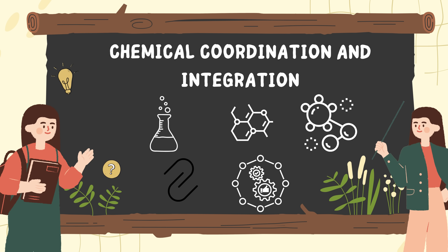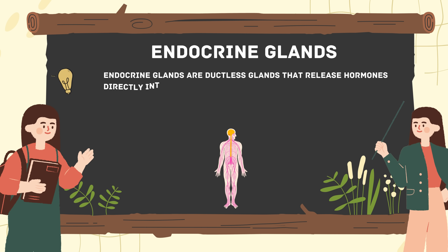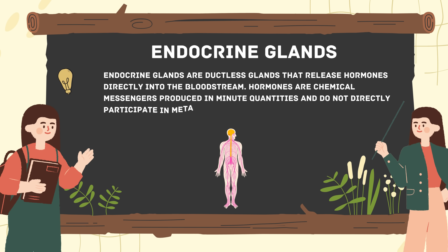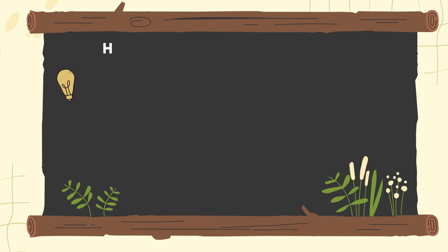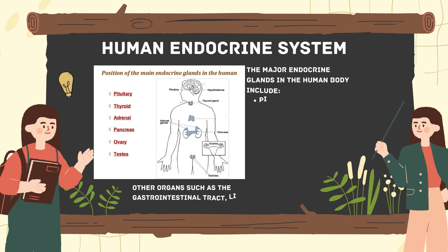Starting with introduction: what are endocrine glands? Endocrine glands are ductless glands that release hormones directly into the bloodstream. Hormones are chemical messengers produced in minute quantities and do not directly participate in metabolic reactions, but regulate various bodily functions by promoting specific processes.